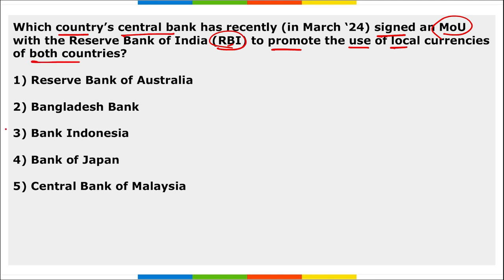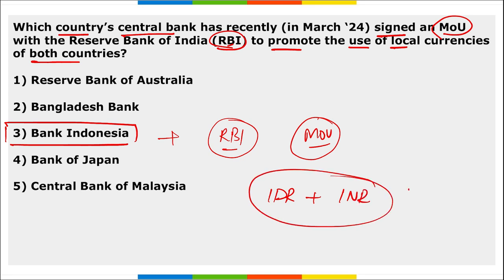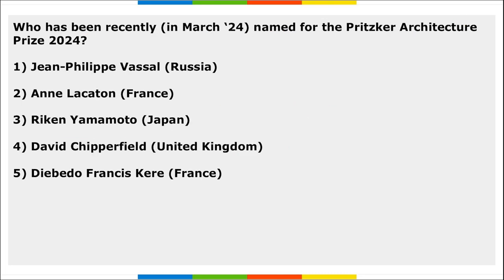Next: which country's central bank has recently signed an MOU with RBI to promote the use of local currencies of both countries? The Bank of Indonesia and the Reserve Bank of India signed an MOU to promote the use of local currencies of both countries in order to enhance trade. This will facilitate trade between the Indonesian Rupiah (IDR) and Indian Rupee (INR).